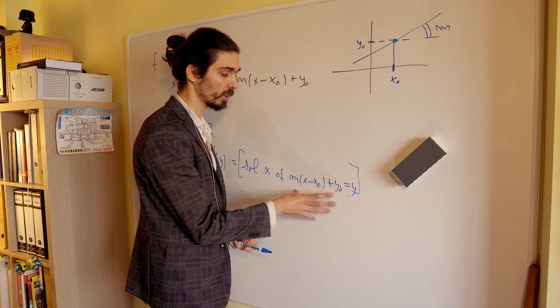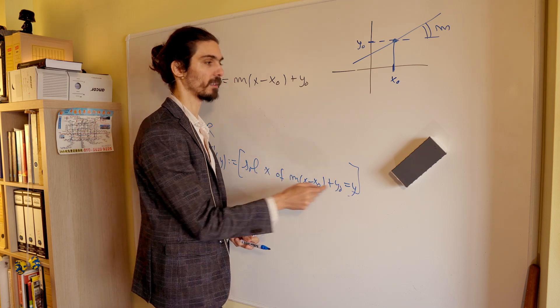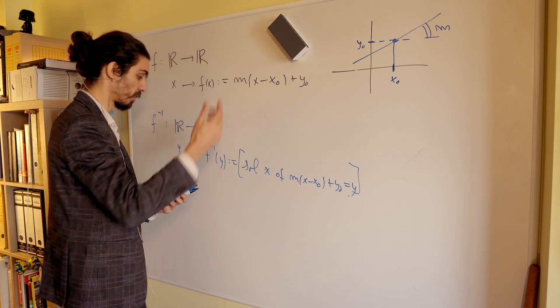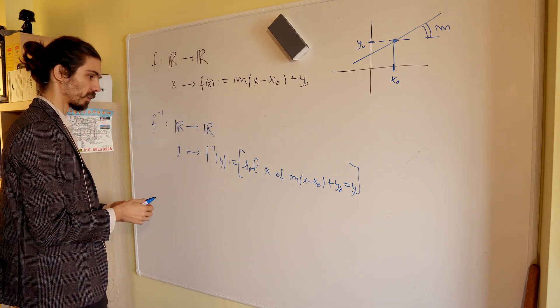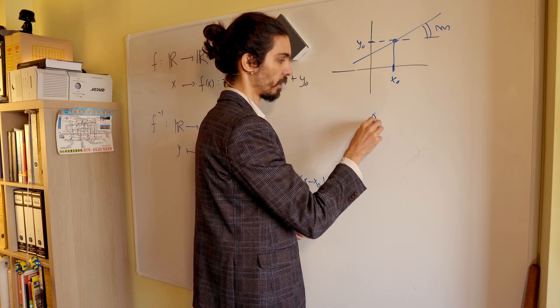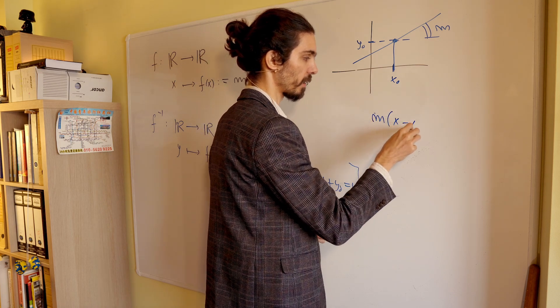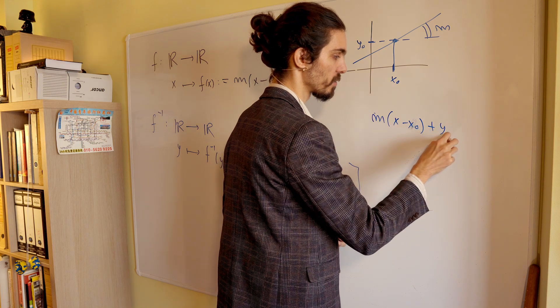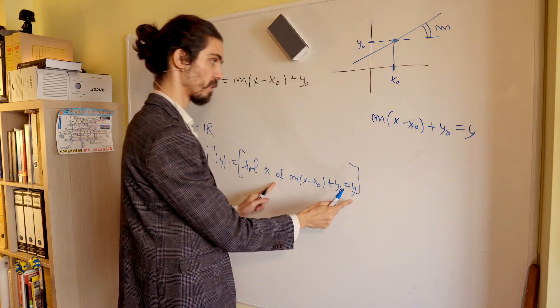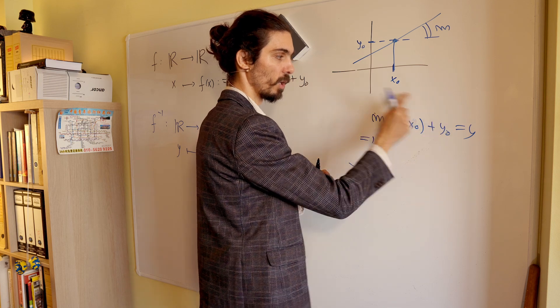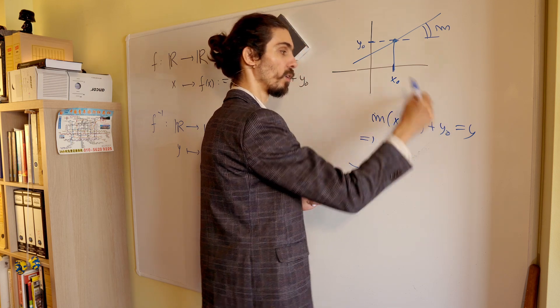This time, what I'm going to do is to simply solve this equation for x. So, I'm not going to guess anything. I'm going to just solve it. So, let's solve it. So, we have m, x minus x0, plus y0 is equal to y. So, this thing. Now, let's undo here what is happening to x.